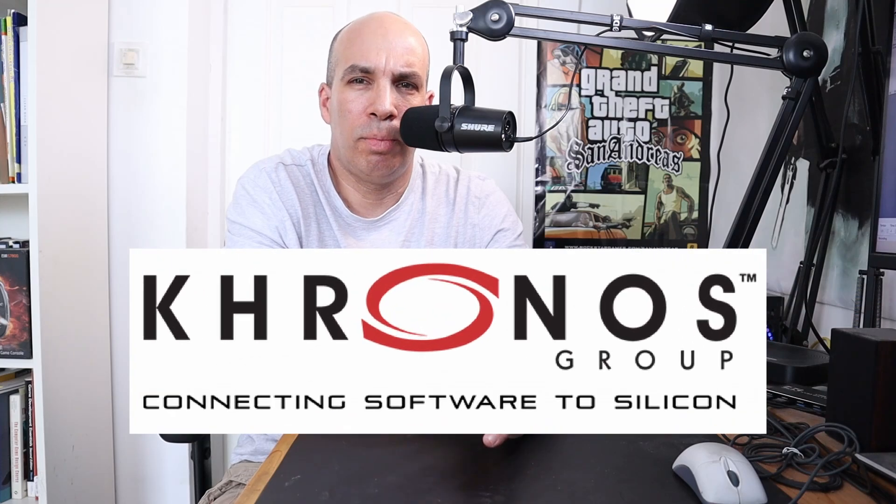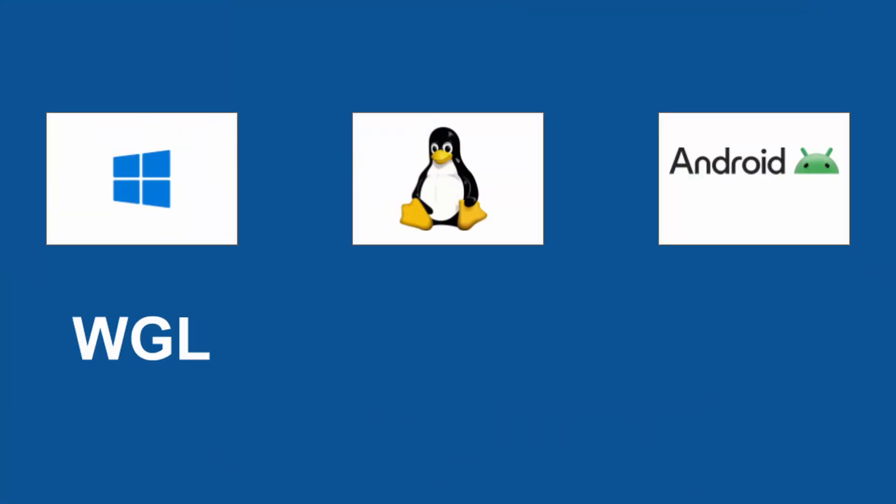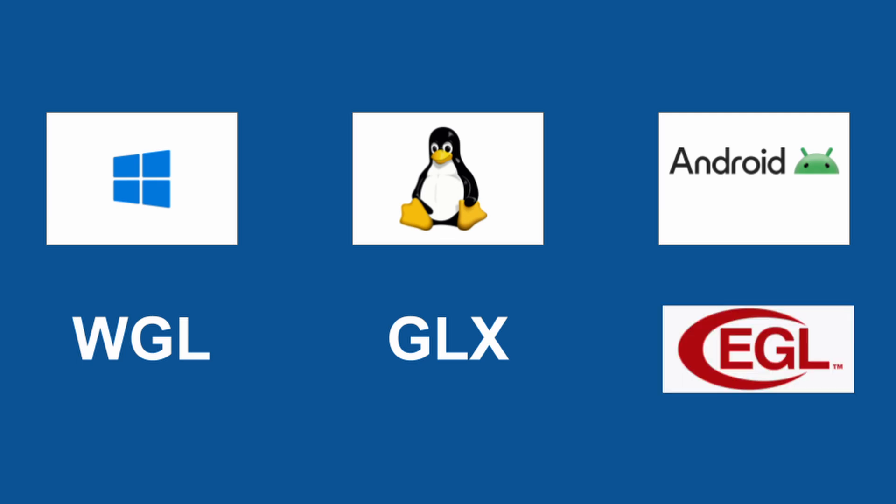This Architecture Review Board continued to exist until 2006, when it was replaced by the Khronos Group, which basically does the same thing and is also in charge of other APIs such as OpenCL, OpenAL, and Vulkan. So, long story short, the OS-specific stuff is part of an OpenGL extension, and we have an extension for each operating system: WGL, or Wiggle, on Windows; GLX on Linux; and EGL on Android. There are a lot of similarities between the APIs.